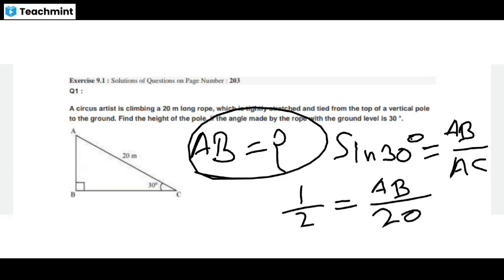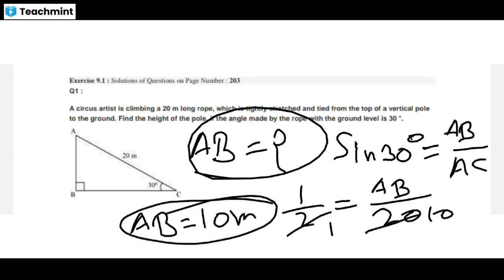AC value is 20. So 20 divided by 2 means AB is equal to 10 meters. That is, the pole height is 10 meters. Thank you.